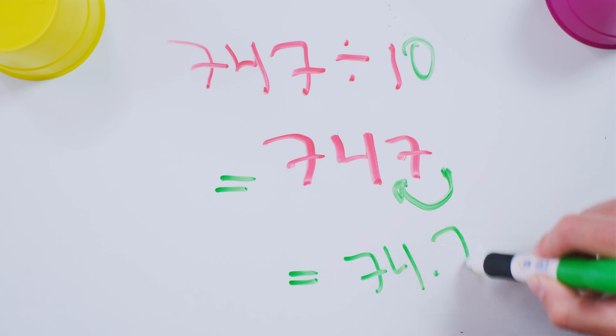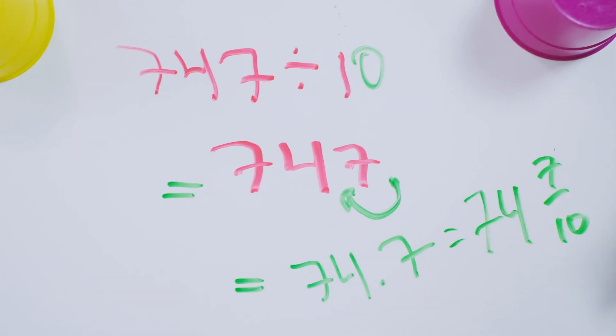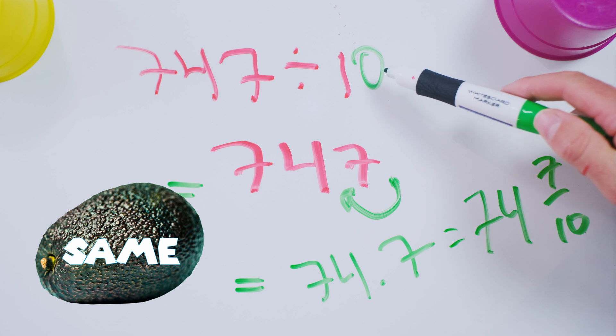And you get 74.7. That's the same thing as, for those who want to know, 74 and 7 tenths. 74 and 7 tenths is also known as 74.7. That's the shortcut. When you divide a positive number by 10.